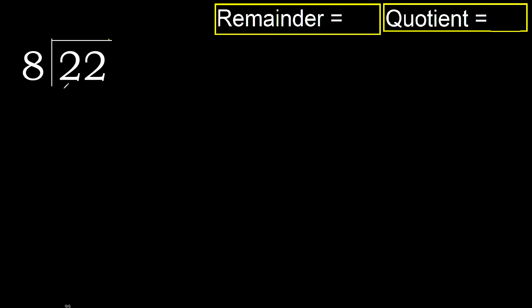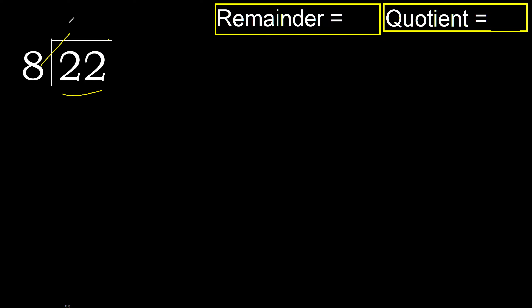22 divided by 8. 2 is less, therefore next. 22 is not less, therefore with 22 and 8, multiply by which number is nearest to 22 but not greater.